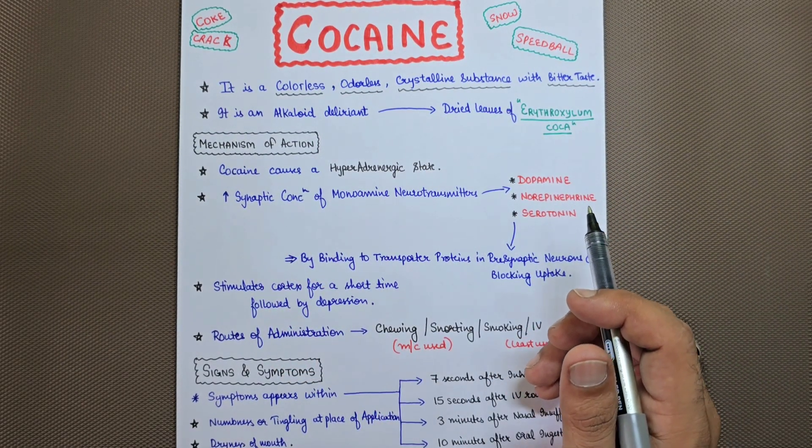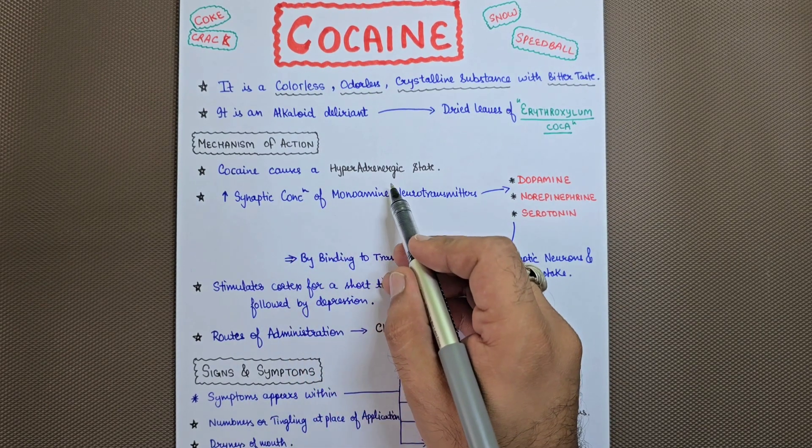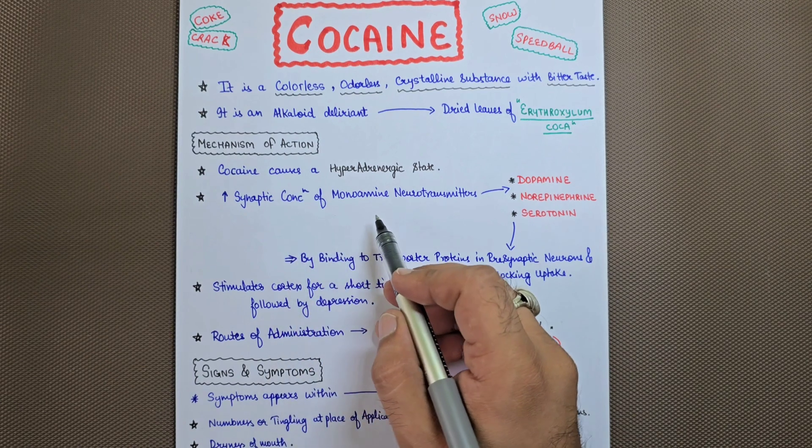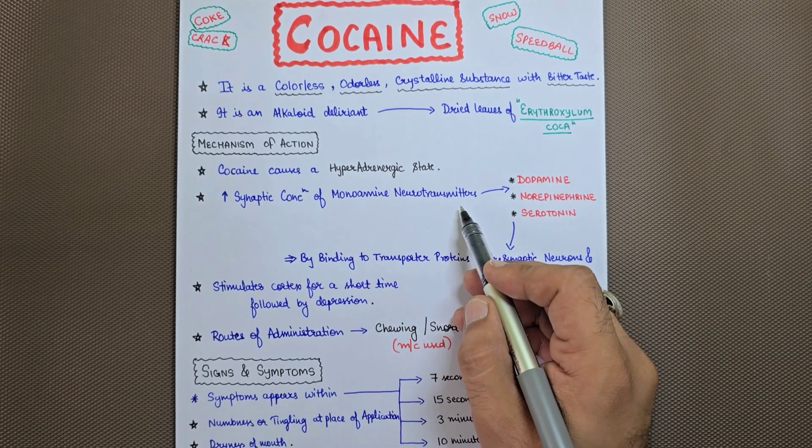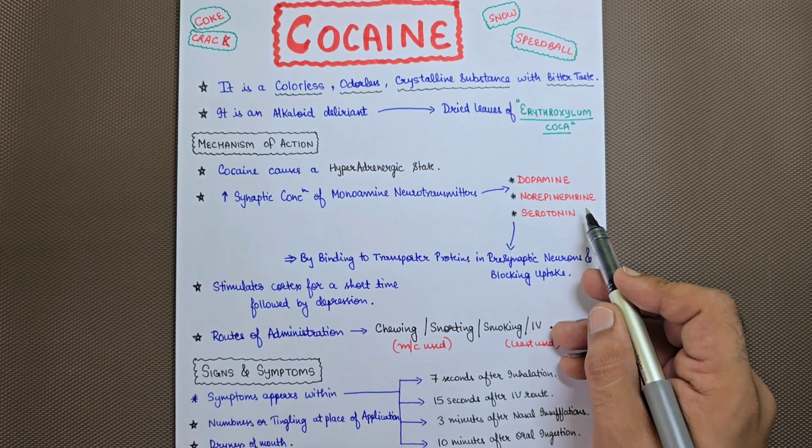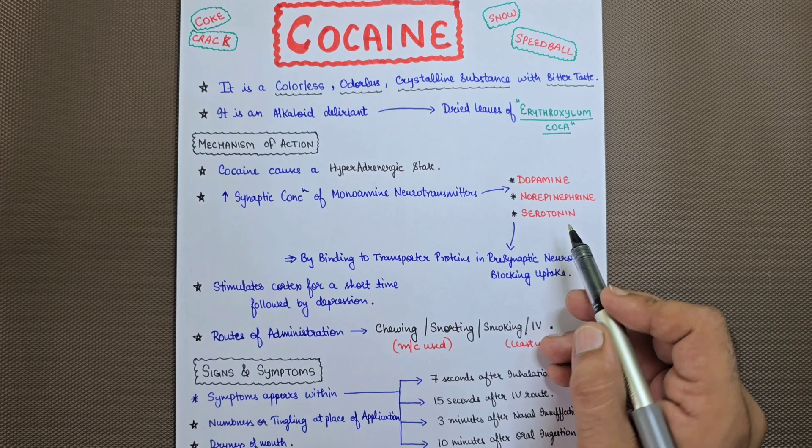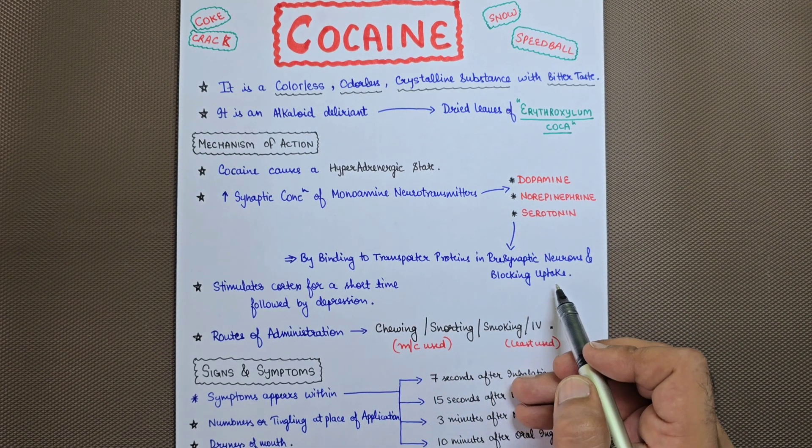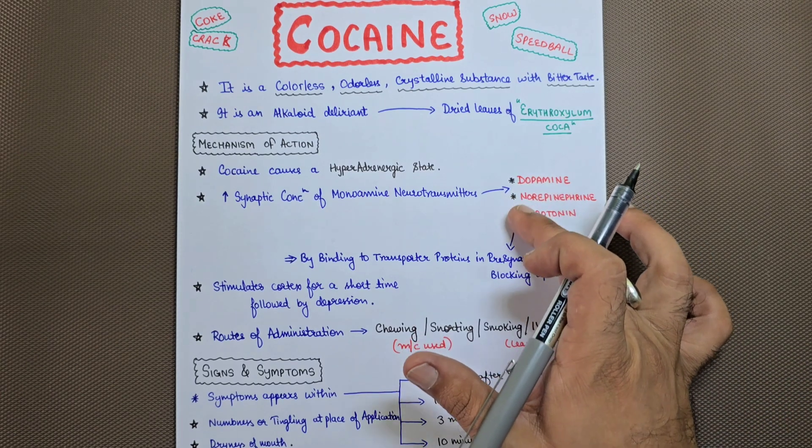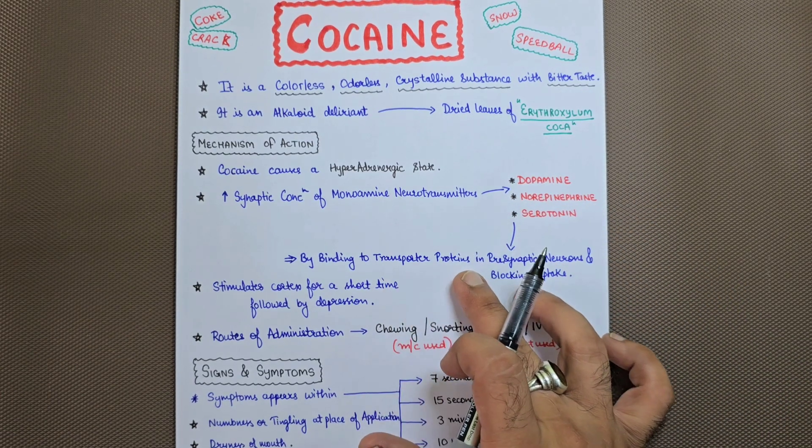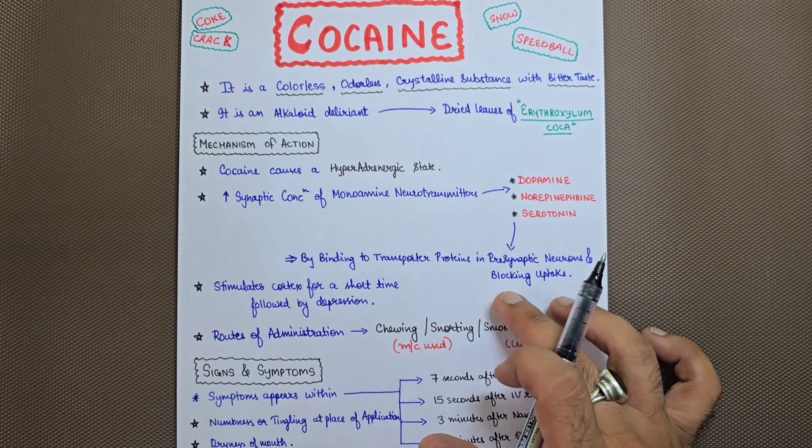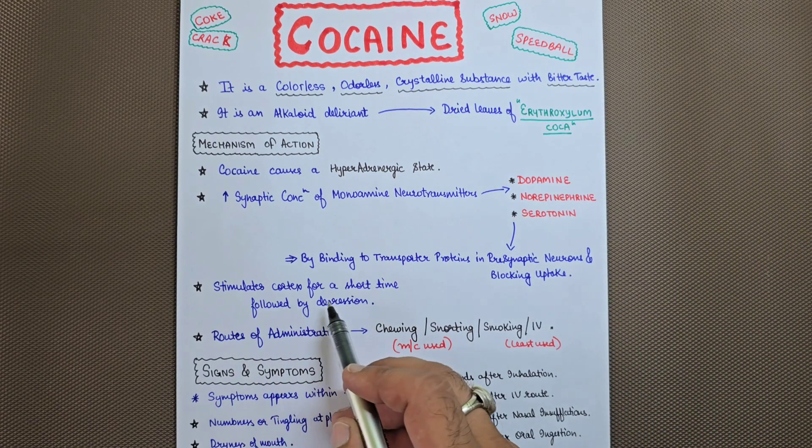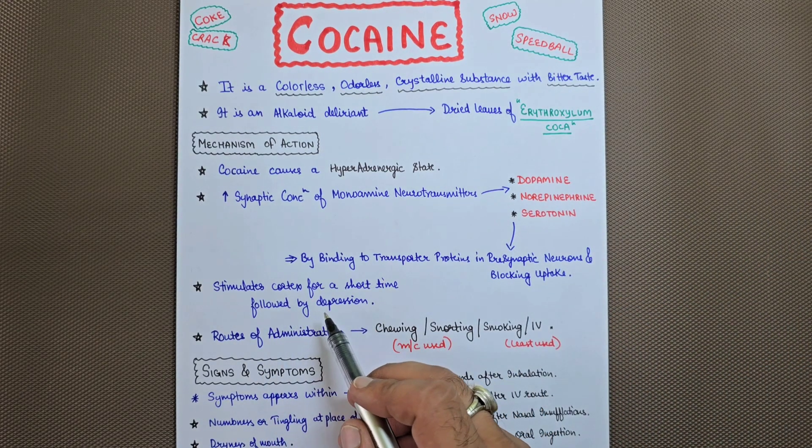What is the mechanism of action of cocaine? Cocaine poses a hyperadrenergic state which leads to increased synaptic concentration of monoamine neurotransmitters, mainly dopamine, norepinephrine, and serotonin, by binding to transporter proteins in presynaptic neurons and blocking uptake. This stimulates the cortex for a short time followed by depression.